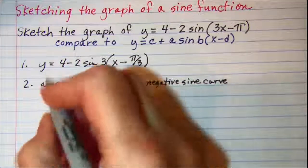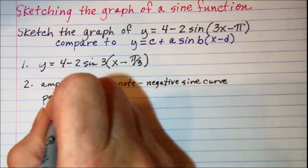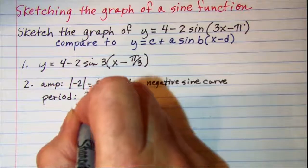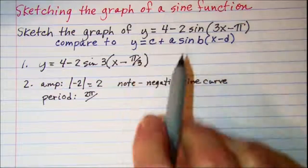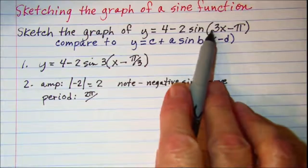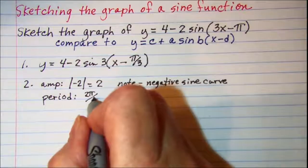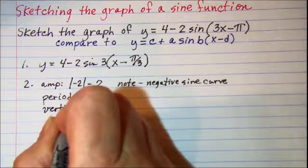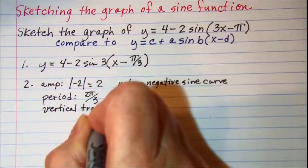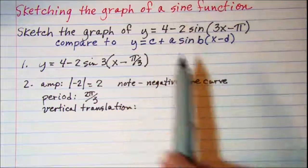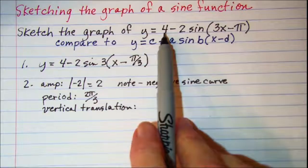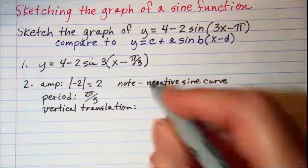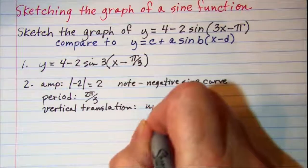Our period is found with the formula 2 pi over b. So 2 pi over 3. Also our vertical translation is found with the c value and we can see that this is a positive 4. So our vertical translation is up 4.